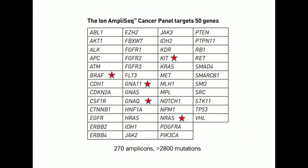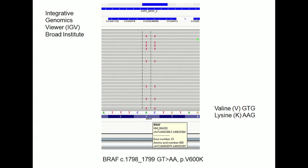At Sinai and many other laboratories we've instituted hotspot mutation panels — one test where we look at hotspot regions known to be frequently mutated in cancer across 50 genes at once. We barcode patient samples and can run colon, lung, and melanoma all in one test, multiplexing 12 different patients simultaneously and interrogating 2,800 mutations in these genes in one test.